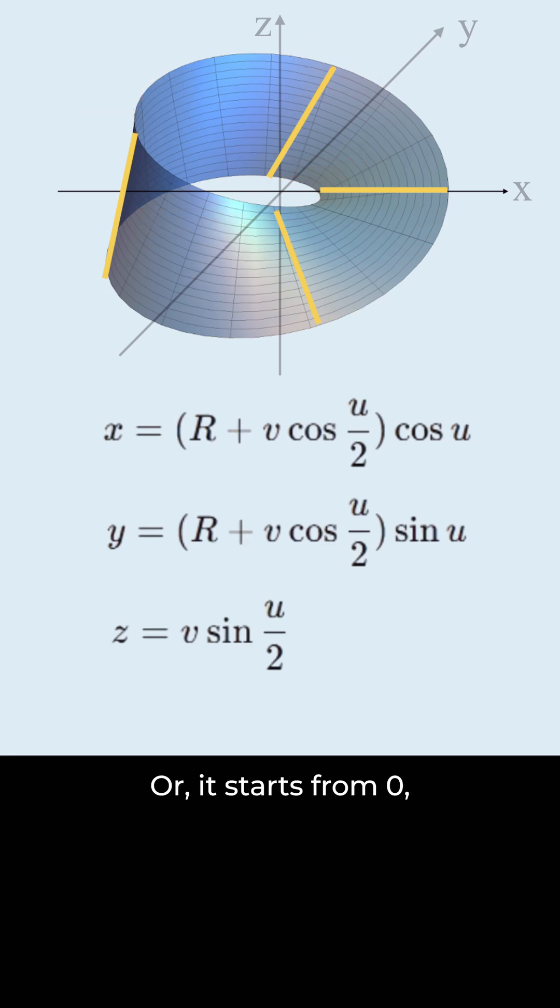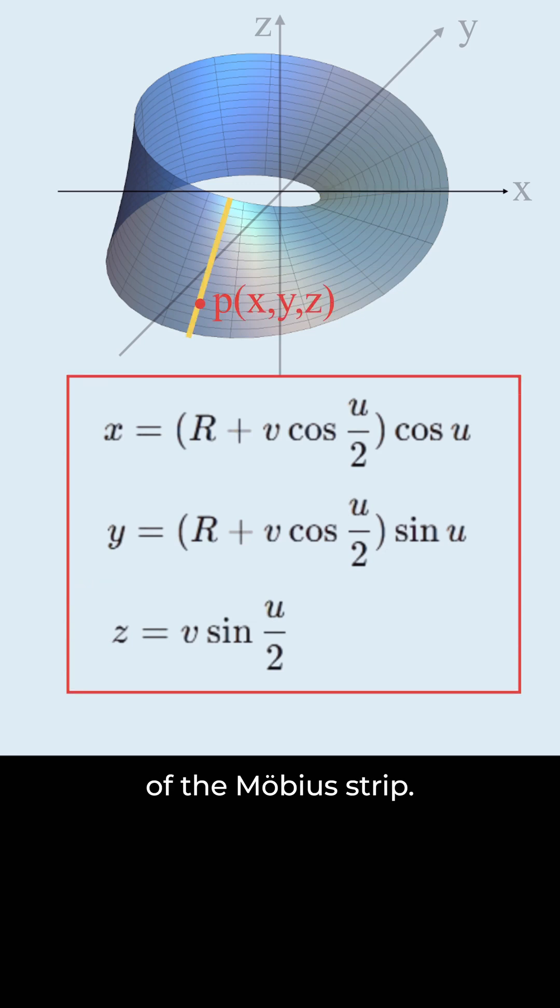Or, it starts from 0, reaches a minimum negative value, then returns to 0. To express this transformation, we use sine u over 2. This is the equation of the Möbius strip.